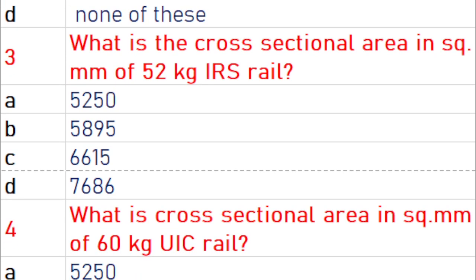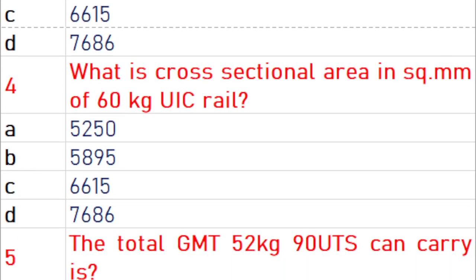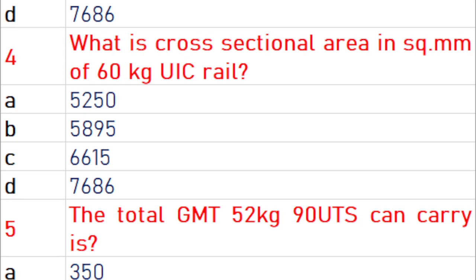What is the cross-sectional area in square mm of 52 kg IRS rail? The right answer is 6615 square mm. What is the cross-sectional area in square mm of 60 kg UIC rail? The right answer is 7686 square mm.